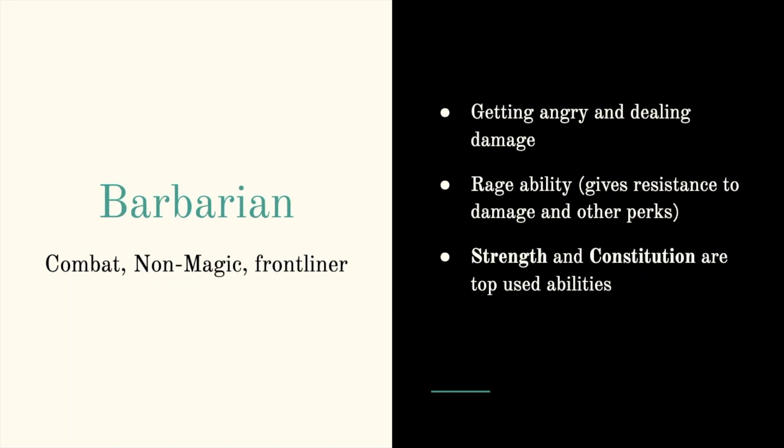A barbarian is also a frontliner, but they are combat and non-magic. They are known for getting angry and dealing damage — specifically the rage ability. If a barbarian goes into rage, they have resistance to damage and other perks such as advantage on certain ability checks. Strength and constitution are the top used abilities for barbarians.